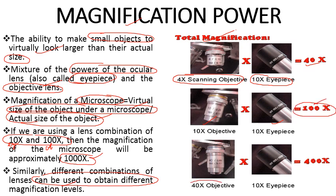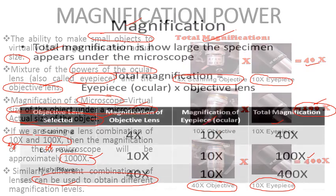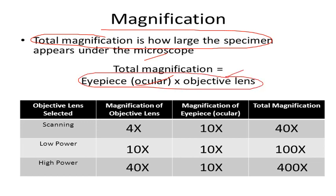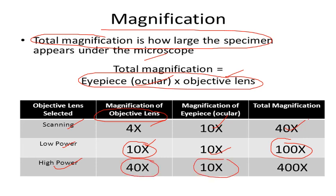Continuing with magnification combinations: a 40x objective lens with a 10x eyepiece gives a total magnification of 400x. This table shows different total magnifications obtained from various lens combinations. Total magnification equals eyepiece magnification multiplied by objective lens magnification. At scanning power, a 4x objective with 10x eyepiece gives 40x total. At low power, a 10x objective with 10x eyepiece gives 100x. At higher power, a 40x objective with 10x eyepiece gives 400x total magnification.